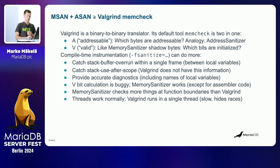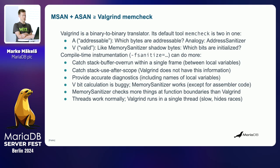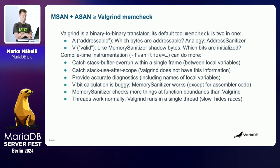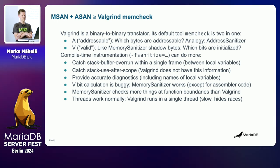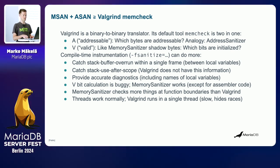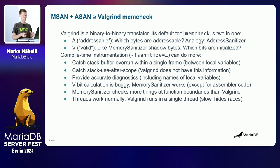Compared to Valgrind, compile-time instrumentation instead of binary-to-binary translation is better because it can catch more things. For example, if you have a buffer overflow between two variables of the same stack frame — local variables allocated from the stack — address sanitizer would insert sentinel data or addresses between them so it can catch that buffer overflow. Valgrind doesn't have that information; it only knows how long the stack frame of a function is and cannot check overflow within that frame.